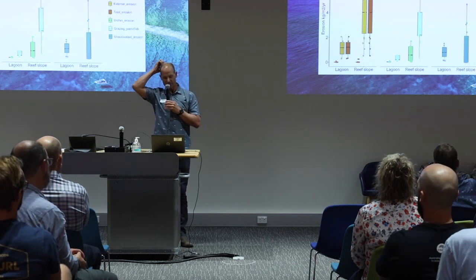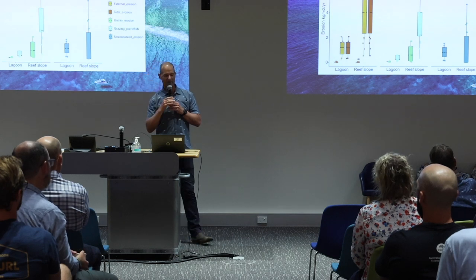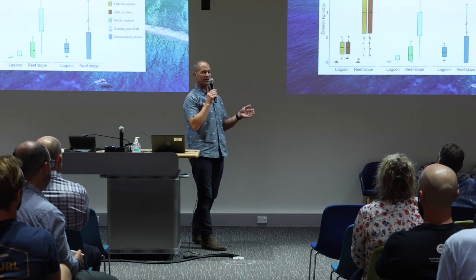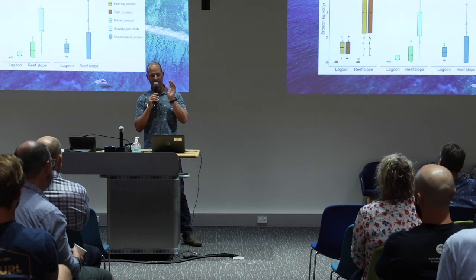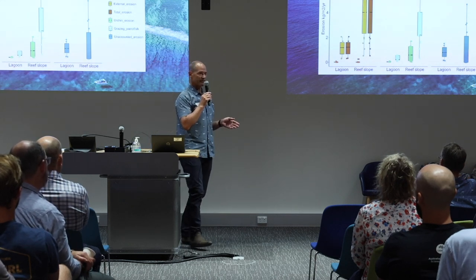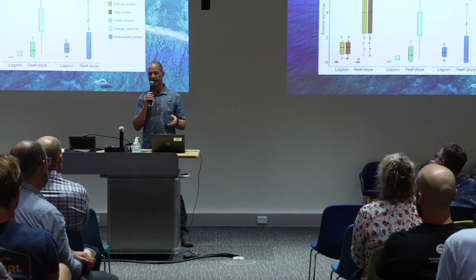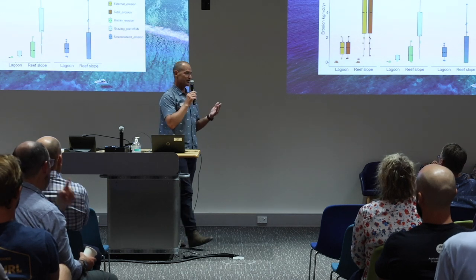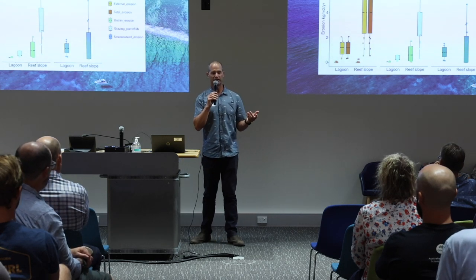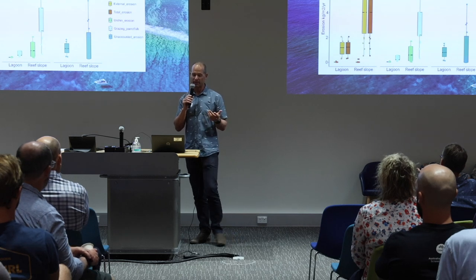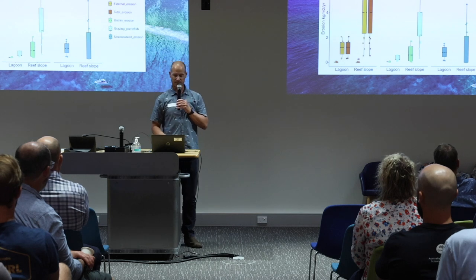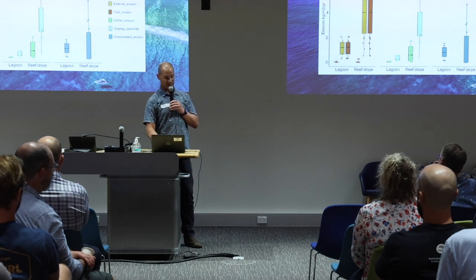Possibly most importantly, there was significant unaccounted erosion — erosion we couldn't attribute to parrotfish or urchins — constituting about 35% of what we actually measured. This is really important because errors in our measurements are likely contributing to this unaccounted erosion, and we may not be capturing all erosional processes, including some physical and chemical erosion.